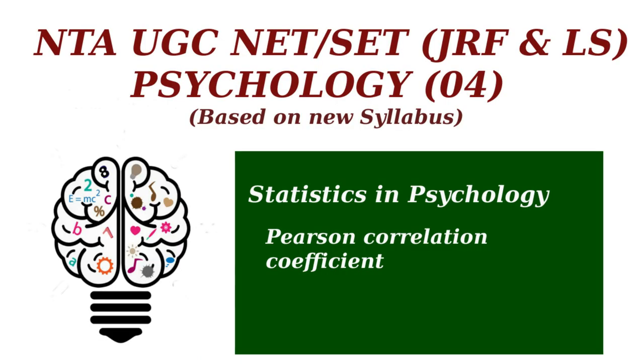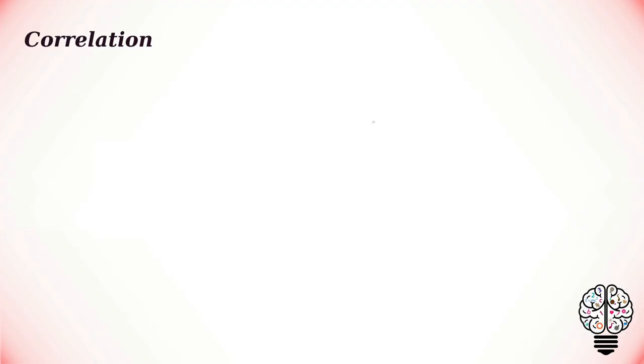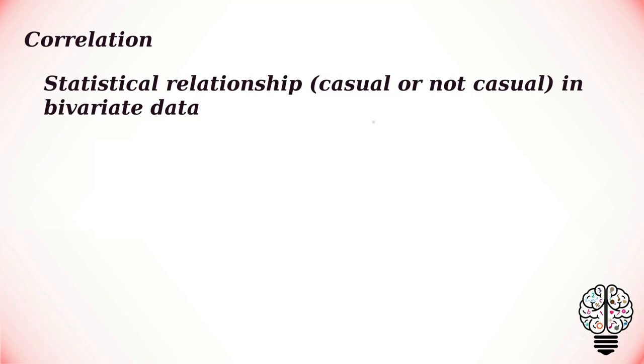Hey everyone, welcome to this psychology lecture series. In this video we are going to talk about Pearson product moment correlation. Correlation is the degree to which two variables are linearly related. Correlation is any statistical relationship, whether casual or not, between two random variables in bivariate data.